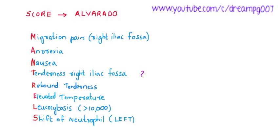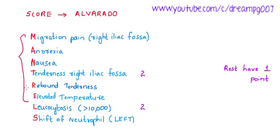Of these features, tenderness in the right iliac fossa and leukocytosis are each given two points, and the rest of the features have one point each. This score can be easily remembered by the mnemonic MANTREL, and it is also called the MANTREL score.